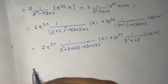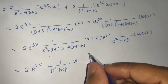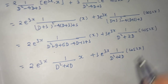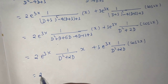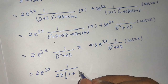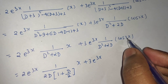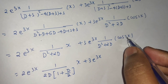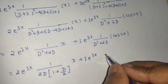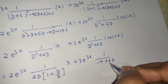So we have 2e^(3x) · 1/(D² + 2D) operating on x, plus 3e^(3x) · 1/(D² + 2D) operating on cos(2x). Take the lowest degree term out: factor out 2D so we get 1/(2D) · 1/(1 + D/2) operating on x. For the cos(2x) term, replace D² by -a² = -4, giving -4 + 2D in the denominator.